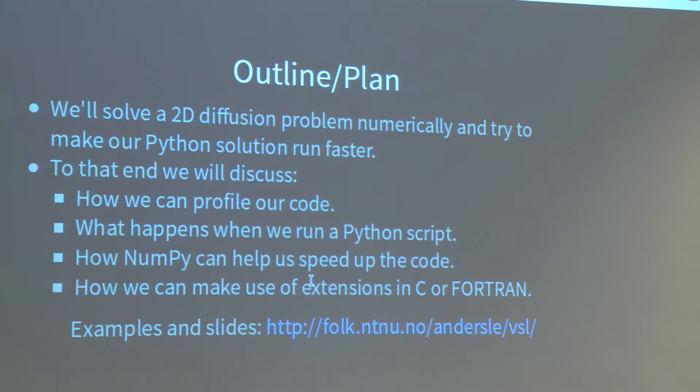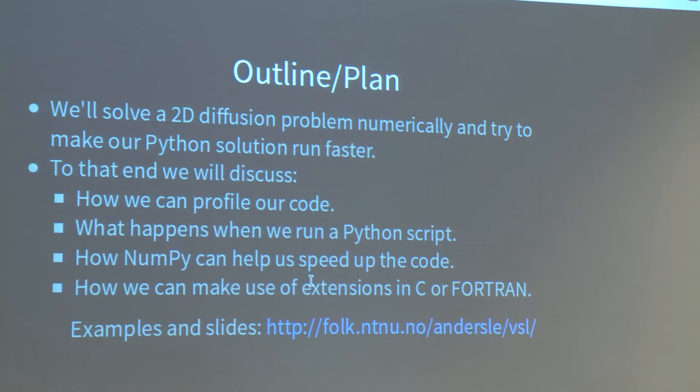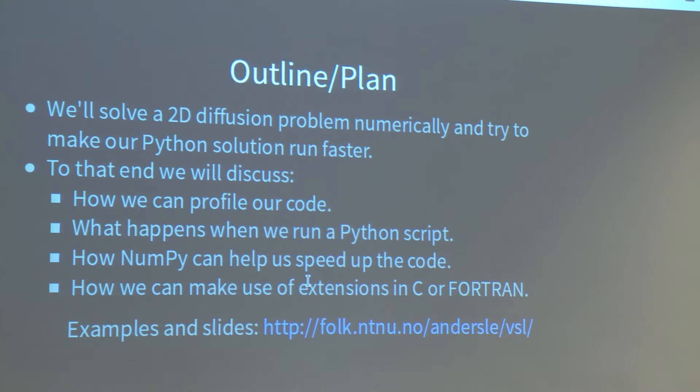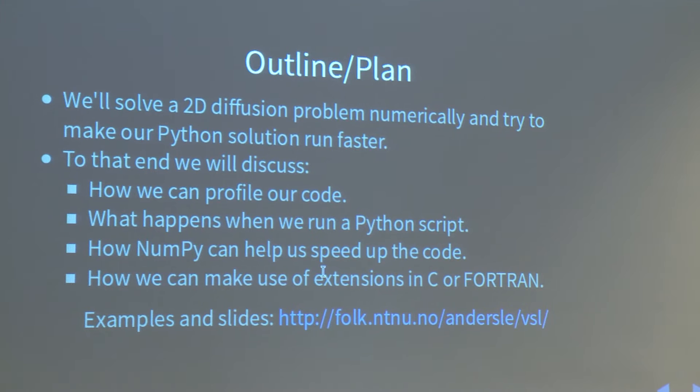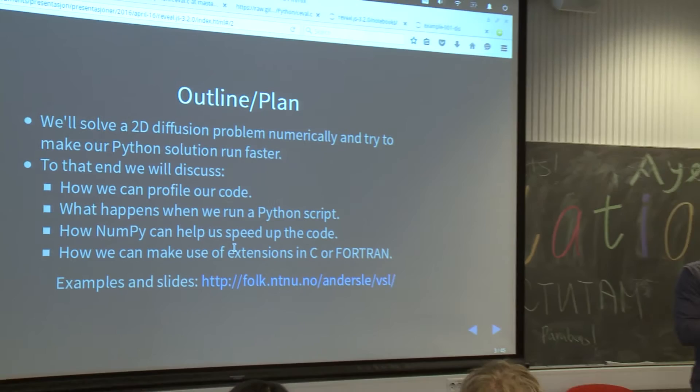To make it more practical, we will go through one example of 2D diffusion, which I hope is familiar to most of you. We'll discuss how we can profile that code to see what parts are slow, try to understand a bit more what Python is actually doing and why it is slow, see how NumPy will be able to help us, and finally how we can do stuff with C or Fortran to make it go even faster.